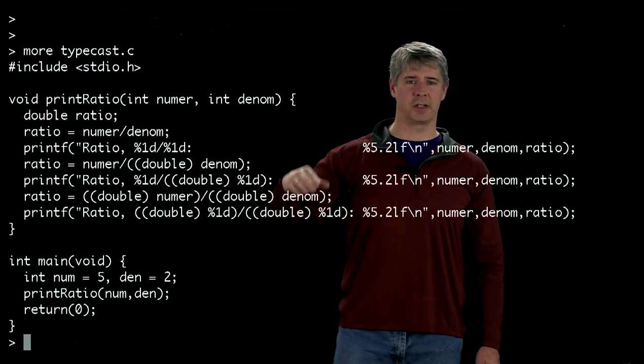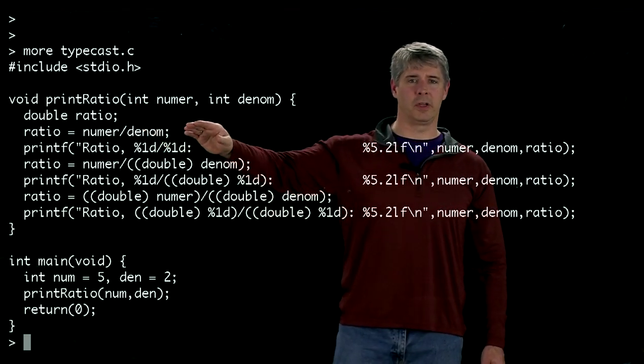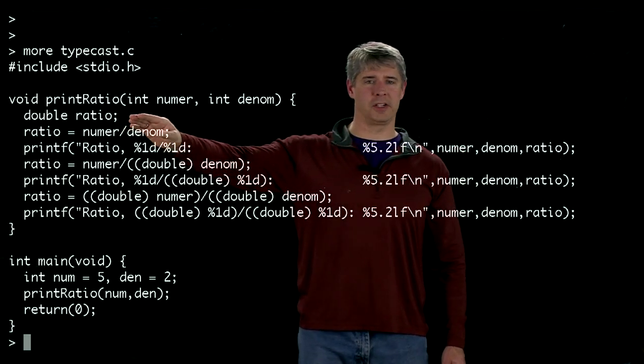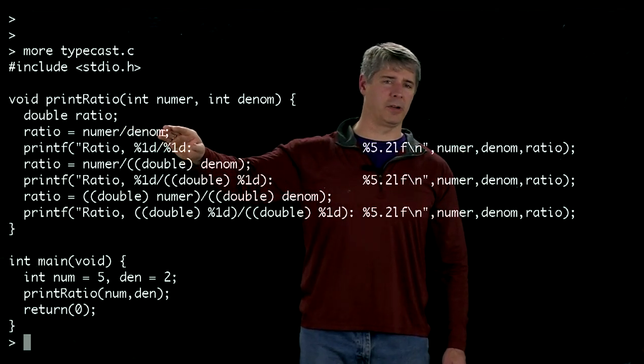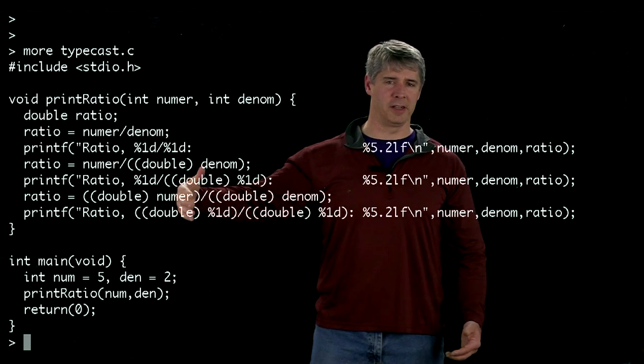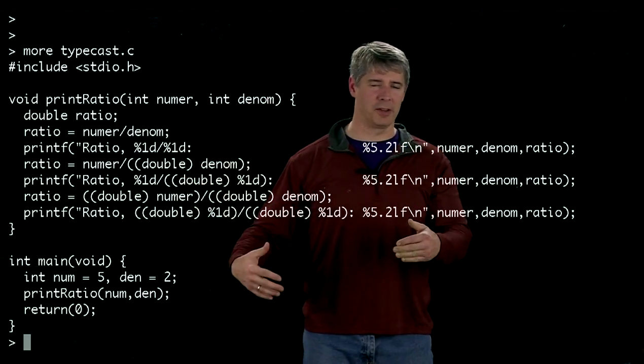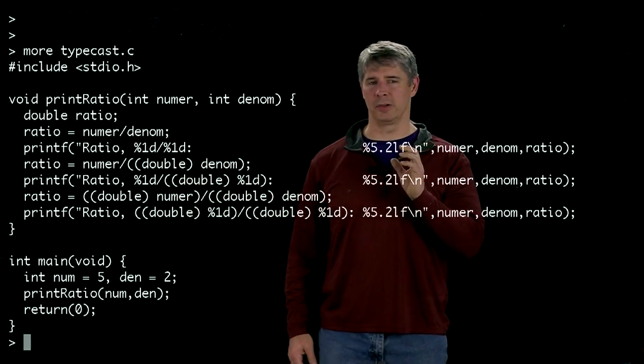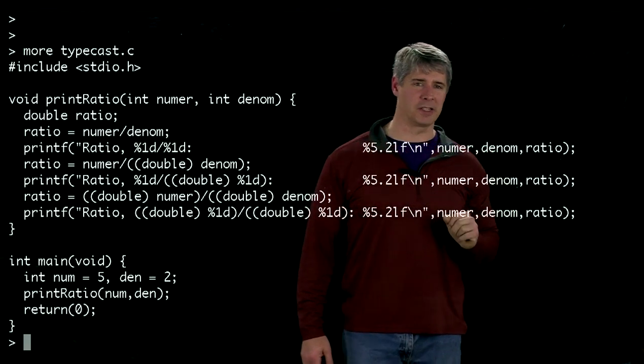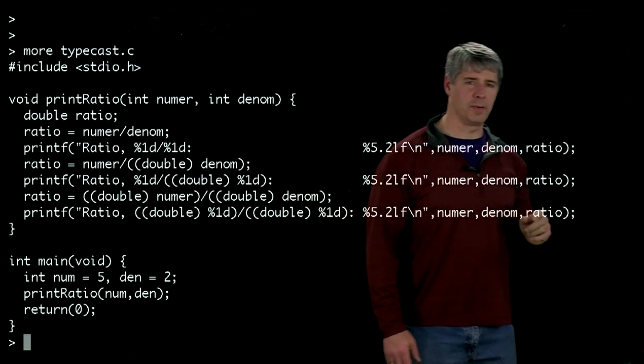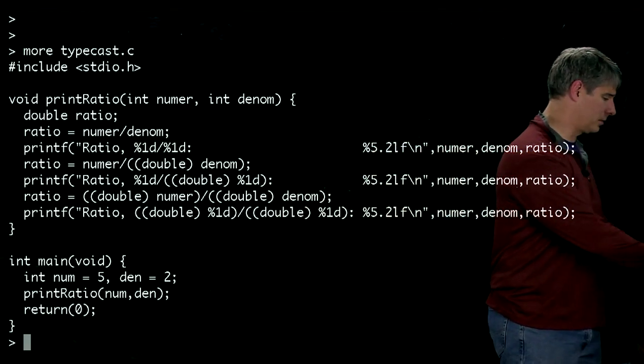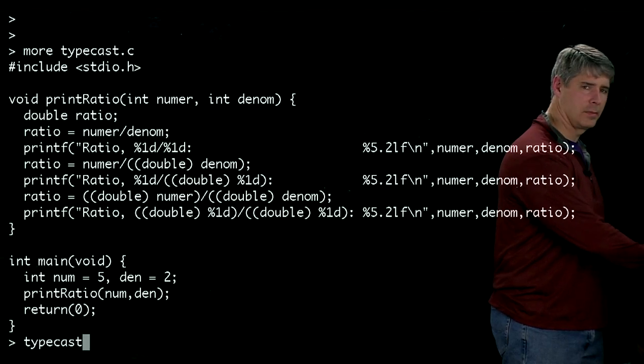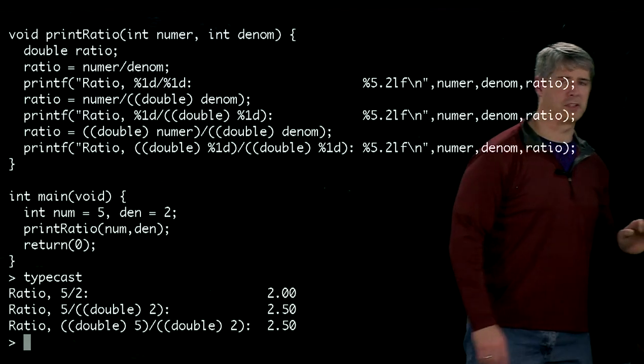When we enter this function after being called here, we define a new variable called ratio and set ratio equal to the numerator divided by the denominator, and we print out the results. I'm going to wait to analyze the rest of it until we run the program. We've already compiled it, so let's try running it. Here's the results.